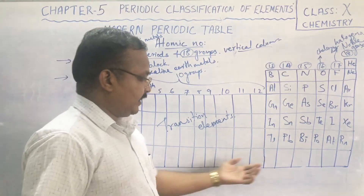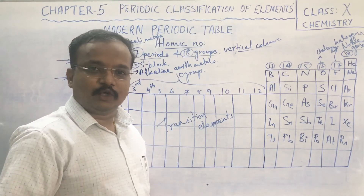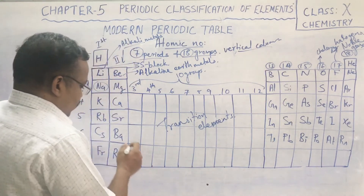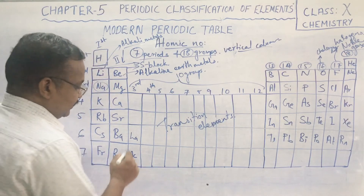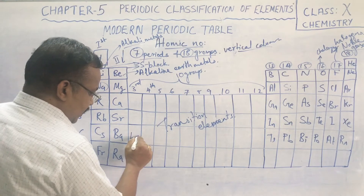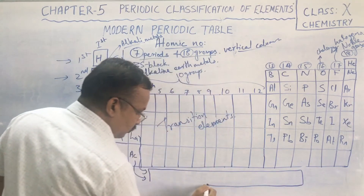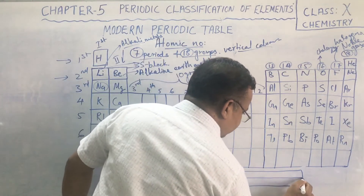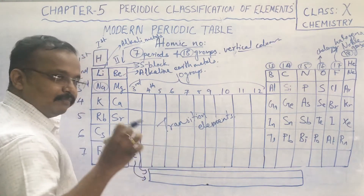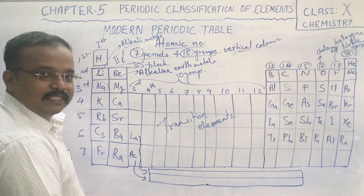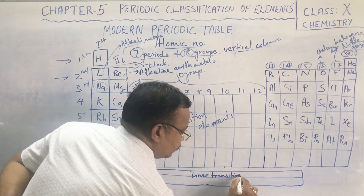The final period elements beyond barium and radium have names given by IUPAC nomenclature, which you will learn in the 11th standard. After barium and radium, we have lanthanum and actinium, which continue into a separate block called the inner transition elements. They have been separated from the main block due to their special characteristics.